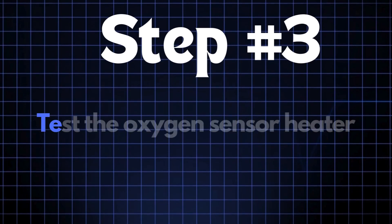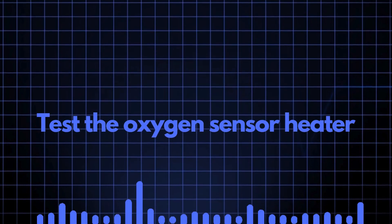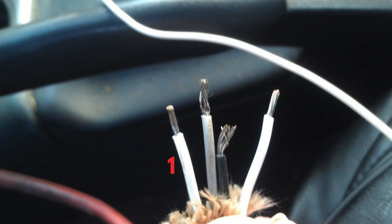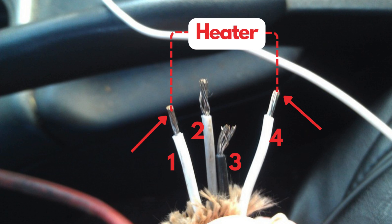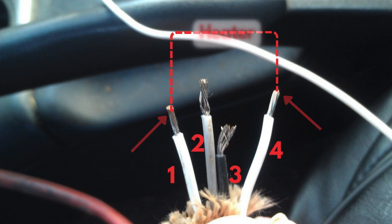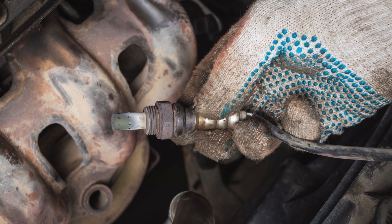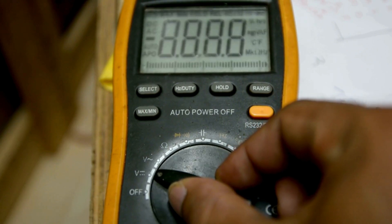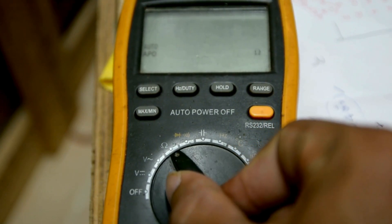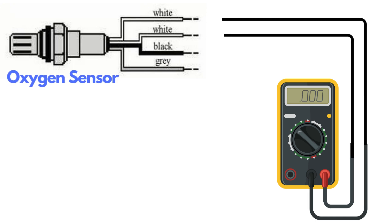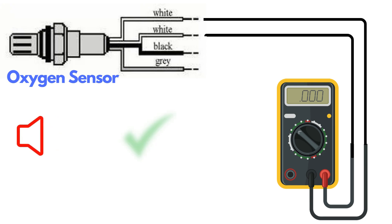Step 3: Test the oxygen sensor heater. Oxygen sensors typically have four wires. Two of these wires, usually of the same color, are dedicated to the heater circuit within the sensor. Over time, the heater circuit can burn out and stop functioning properly. To test it, you'll need a multimeter. Set the multimeter to check for continuity, then place the probes on the two heater wires. If the circuit has continuity, the multimeter will beep, indicating that the heater is functioning.